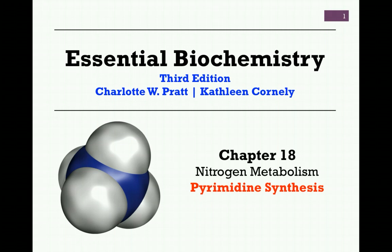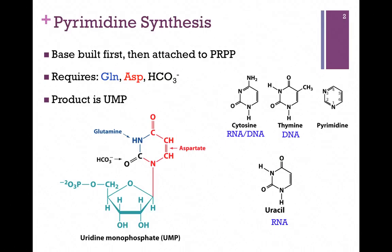In our next lesson on nitrogen metabolism from Chapter 18, our subject will be pyrimidine biosynthesis. Recall that our pyrimidine bases are cytosine, thymine, and also uracil. Cytosine is present in both RNA and DNA, thymine is present only in DNA, and uracil is present in RNA.